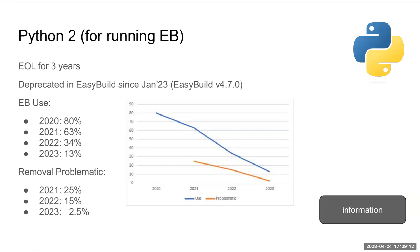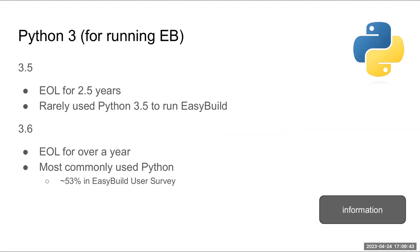This is the change Kenneth already spoiled: Python 2 support. This is entirely about what Python is used to run EasyBuild itself. Based on the user survey, Python 2 use has gone down and we deprecated it earlier this year, with warnings going back longer. Looking at Python 3 versions, the survey suggests nobody is using Python 3.5. Python 3.6 is already end-of-life for a year but remains problematic because it's the default on Red Hat-based systems, at least on version 8.